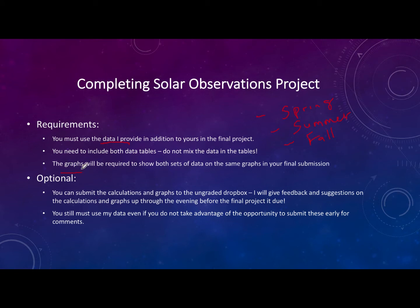The graphs we're going to look at today must show both sets of data — that means my data that I provide and your data, your observations, when you make your final submission. Optionally, you may submit these calculations and graphs to the ungraded Dropbox so I can give you feedback and suggestions and let you know if there are any issues so you can make corrections before submitting the final project. However, that is completely optional — if you're comfortable with it you are welcome to just go ahead and submit.